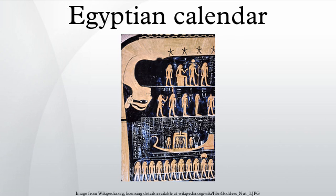According to Roman writer Censarinus, the Egyptian New Year's Day fell on July 20 in the Julian calendar in 139 CE, which was a heliacal rising of Sirius in Egypt. From this it is possible to calculate that the previous occasion on which this occurred was 1322 B.C., and the one before that was 2782 B.C.